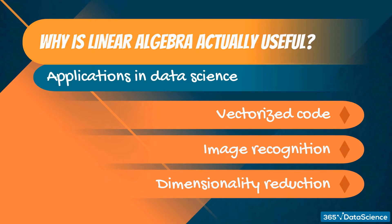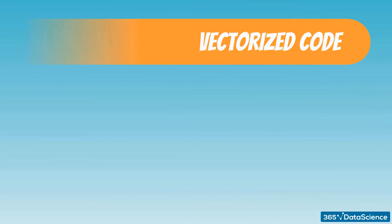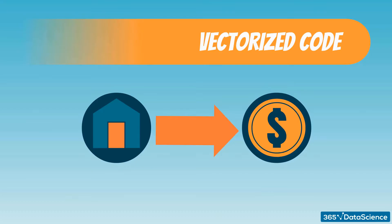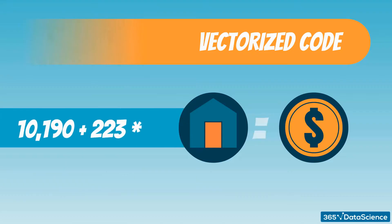Let's start from the simplest and probably the most commonly used one, vectorized code. We can certainly claim that the price of a house depends on its size. Suppose you know that the exact relationship for some neighborhood is given by the equation: price equals 10,190 plus 223 times size.